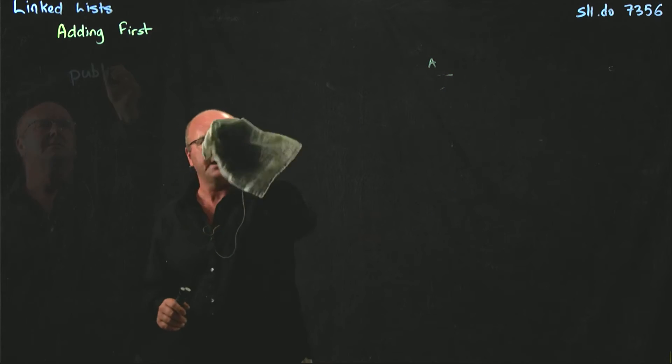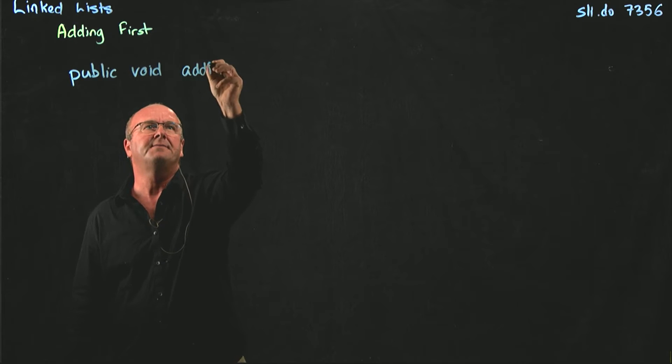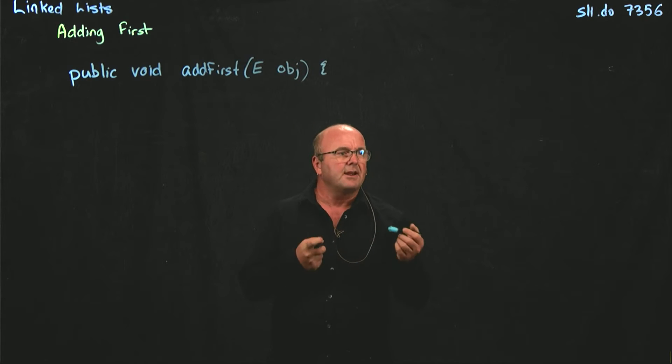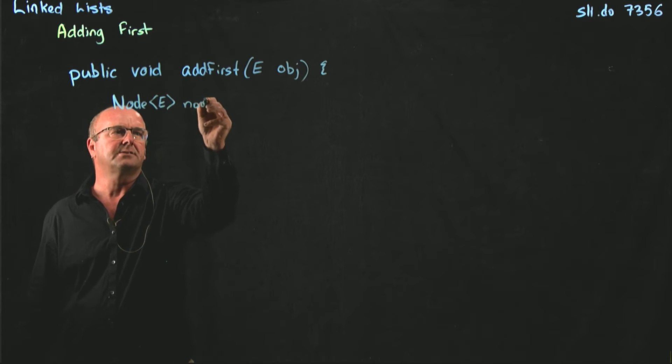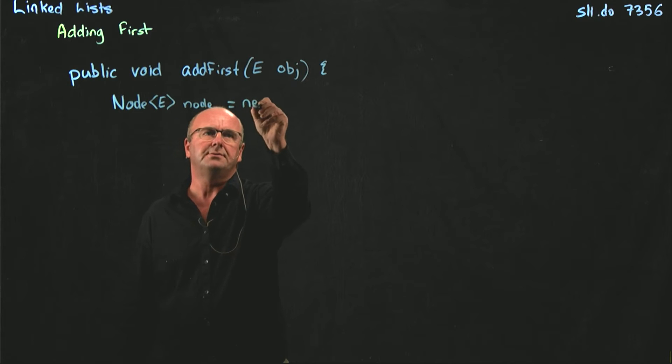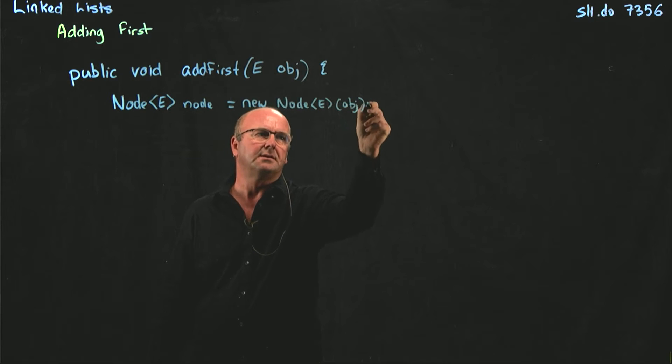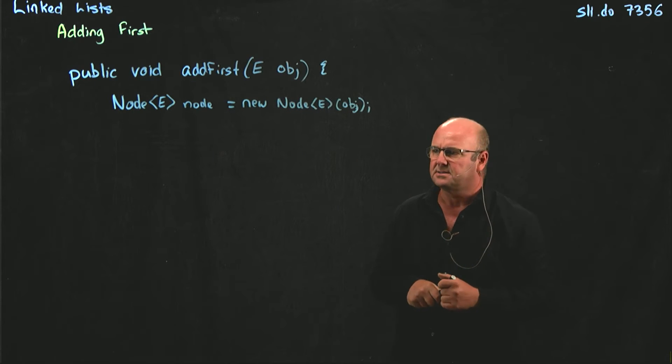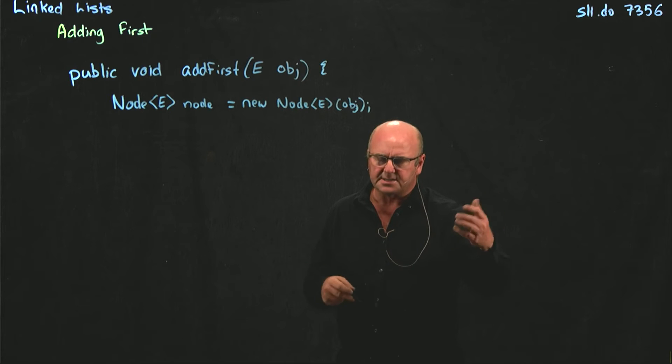Let's have a look at the code for adding to the beginning of a linked list. So our method is public void addFirst, and we take an E object. So the first thing we have to do is create our new node. Before we can do anything else, we have to create our new node. So that looks something like this: node e, let's just call it node with a little n, is equal to new node E with object. We don't care what object is, that's what we've been told to add. We just pass it off to our node class. Our node class puts that in data, remembers it, and initiates next to point to null.